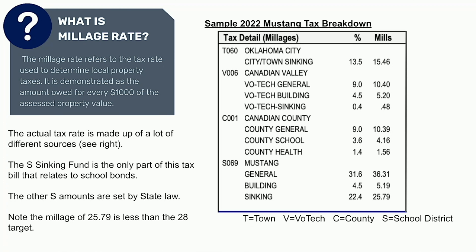You live in Oklahoma City, you live in Canadian County, and your kids go to Mustang School — that's what this situation is. It would be a little bit different for somebody that lives in the city of Mustang; you definitely wouldn't see Oklahoma City on there. So this is a breakdown for somebody in that situation.